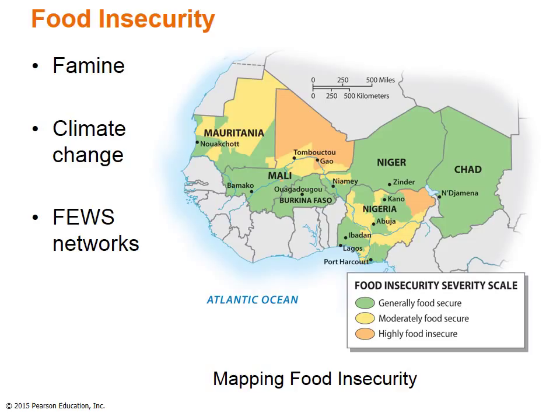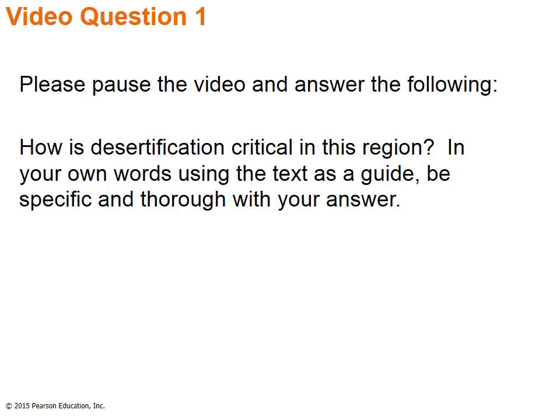The map shows the severity scale from 2013 data. Both Niger and Mali experienced high food insecurity due to the conflict in that area. Please pause the video and answer the following: How is desertification critical in this region? In your own words, using the text as a guide, be specific and thorough with your answer.